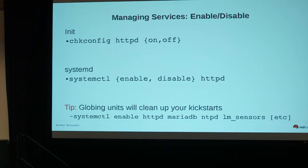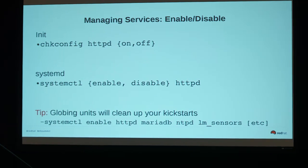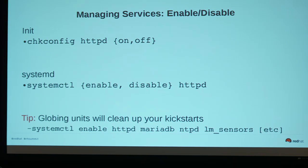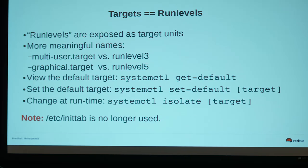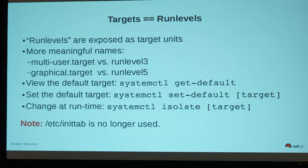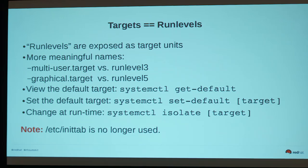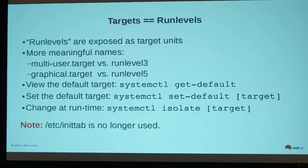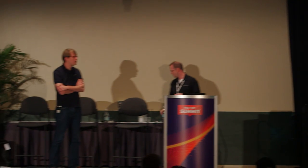For enabling and disabling — just like chkconfig on/off — you can still use chkconfig in RHEL 7, but I recommend using the right command: 'systemctl enable' or 'systemctl disable'. Globbing works great here too, and it's a really easy way to clean up kickstarts. Now, targets: run levels are a kind of deprecated concept, but we have something better — targets. It's really familiar because all the old names are symlinked. Run level 3 was usually the multi-user run level, so we call it multi-user.target. Run level 5 was the graphical run level, so we call it graphical.target.